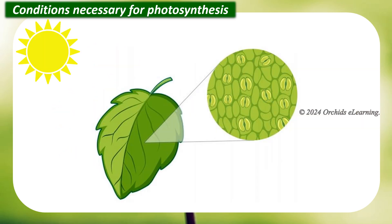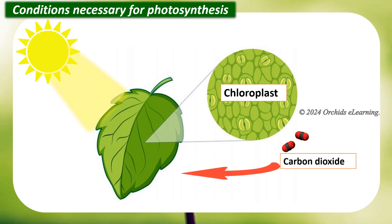Chlorophyll is usually present in the leaves in structures called chloroplasts. Light energy is absorbed by the chlorophyll. Carbon dioxide is obtained from the atmosphere through small openings called stomata, mostly present on the underside of the leaves. Let us understand stomata.